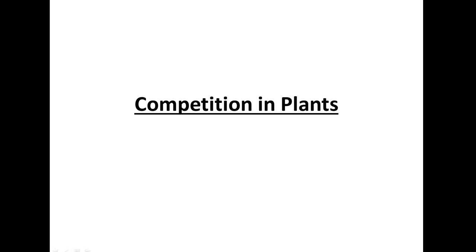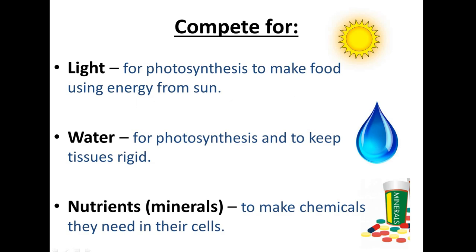Today's lesson is about competition in plants. The three main things that plants compete for is, first of all, light, because that is needed for photosynthesis. The chlorophyll in the chloroplast absorbs the light, and this light energy is converted into chemical energy in the form of glucose.